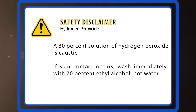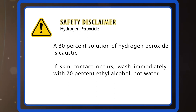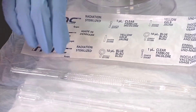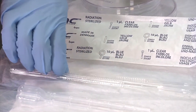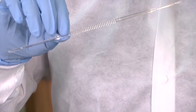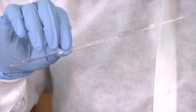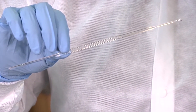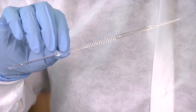A 30% solution of hydrogen peroxide is caustic. If skin contact occurs, wash immediately with 70% ethyl alcohol, not water. You will also need sterile wood applicator sticks or plastic loops. Avoid using wire loops because the metal within the loop could interfere with the reaction and cause a false positive.